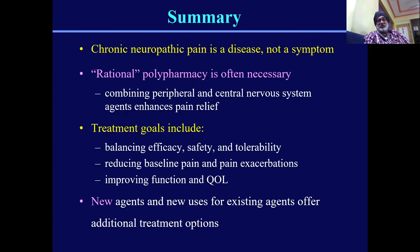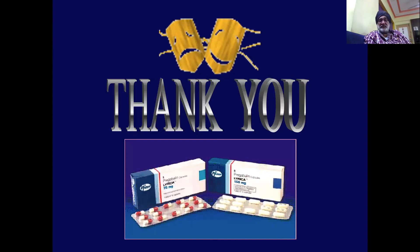To summarize: chronic neuropathic pain is a disease, not a symptom. Rational polypharmacy is often necessary, combining peripheral and systemic agents to achieve good pain relief. The treatment goal is balancing efficacy, safety, and tolerability, reducing baseline pain and pain exacerbations, and thereby improving function and quality of life. Thank you very much.